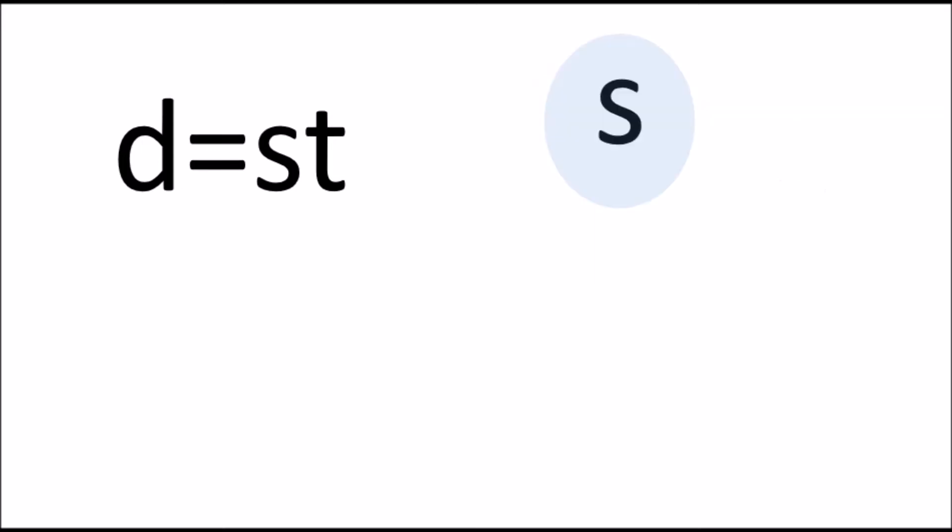Let's say we're looking for s. Well what's happening to s here is being multiplied by t. How do you stop s being multiplied by t? You divide it by t. And the golden rule: what you do to one side, you must do to the other. It doesn't matter what you do. You could multiply it by a billion. As long as you do it to the other side as well, that's absolutely fine. So we've divided that side by t, so we have to divide that side by t as well.